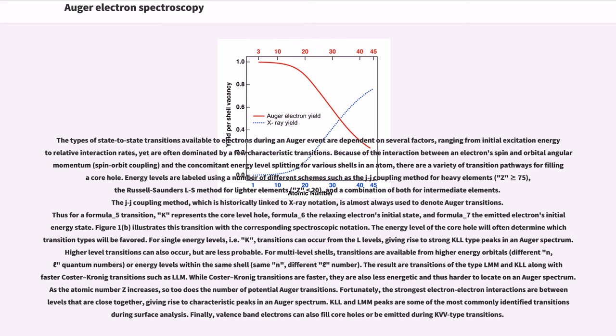For single energy levels like K, transitions can occur from the L levels, giving rise to strong KLL-type peaks in an Auger spectrum. Higher level transitions can also occur, but are less probable. For multi-level shells, transitions are available from higher energy orbitals, different N and L quantum numbers, or energy levels within the same shell, same N, different L number.